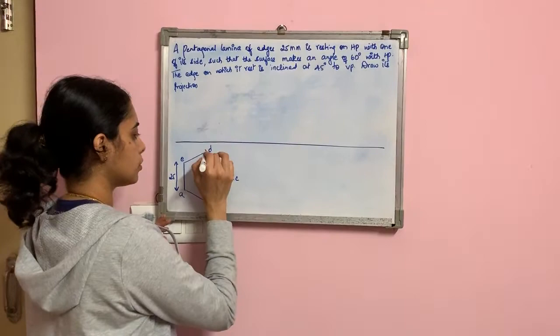Now for the third stage: the edge on which the lamina rests — side AE — is now inclined at 45 degrees to VP. You can take 45 degrees either way. Since this is a problem resting on an edge, the edge distance in the second stage is the same as in the third stage because you project parallelly. The true length of the side is equal in both stages, so there is no need to determine the beta angle.